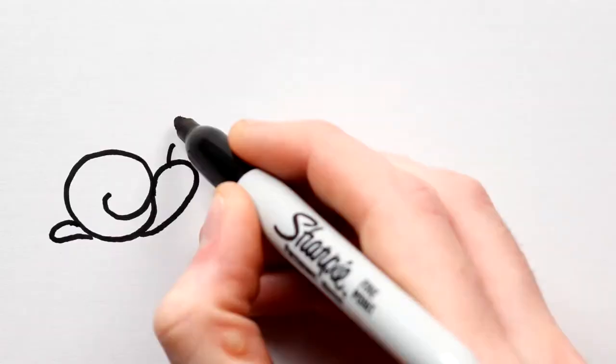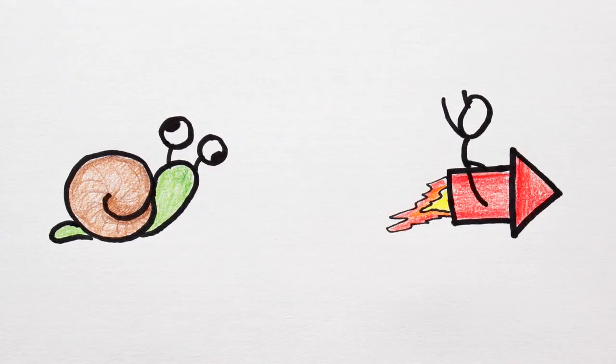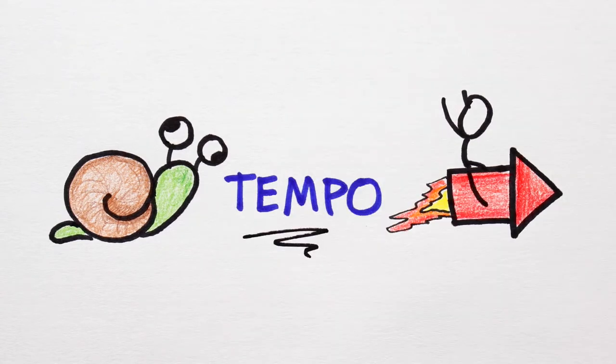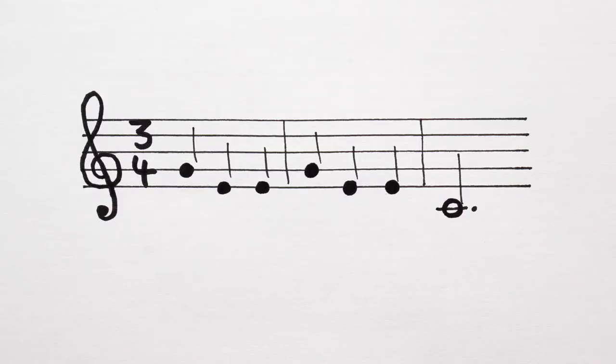The speed at which a piece of music is played is known as the tempo. Often times the composer will write a tempo marking above the first bar of a piece to tell us how fast or slow to play.